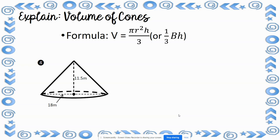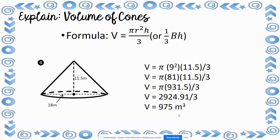Now find the volume of cone number 4 and put it in the chat. The volume is 975 meters cubed. The diameter is 18, so the radius is 9. Plugging in: pi times 9 squared times 11.5, divided by 3. 9 squared is 81; 81 times 11.5 is 931.5; 931.5 times 3.14 is 2,924.91. Divided by 3 gives approximately 975 meters cubed.